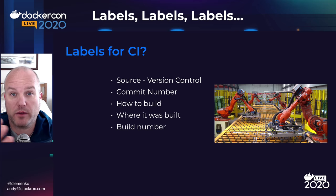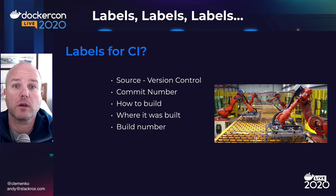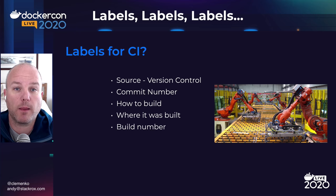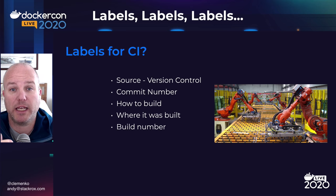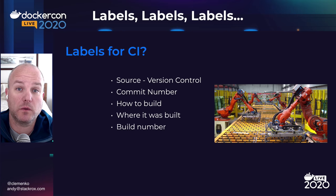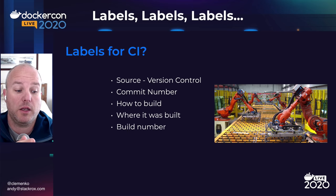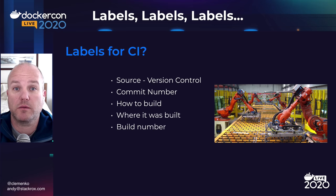What's the commit number? That might be interesting in terms of tracking the resulting image to a person or to a commit. How is it built? What if you wanted to do a git clone of the repo and then build the Dockerfile on your own? Having a label specifically dedicated to how to build this image might be interesting for development work. Where it was built, and obviously what build number.